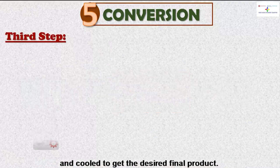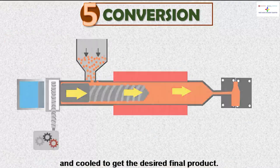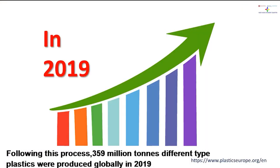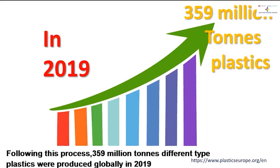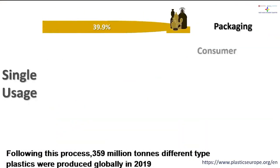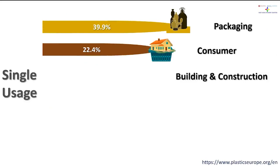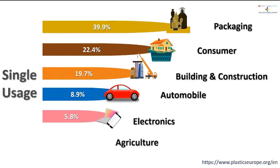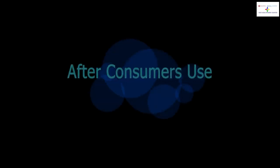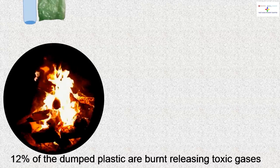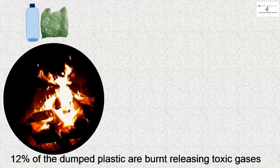At the last step, the resins are reheated, molded, and cooled to get the desired final product. Following this process, 359 million tons of different types of plastics were produced globally in 2019, and we use them for various purposes.